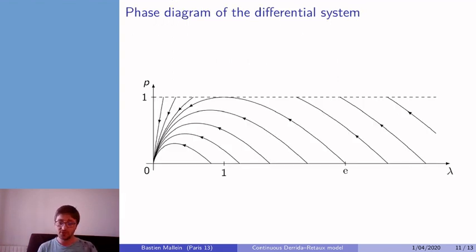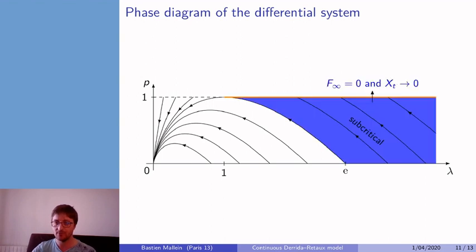So I draw here some lines that are of the form p over λ plus log λ equal to a constant. So observing that λ has to decrease when it follows this ODE, we can observe that (pₜ, λₜ) follows the black lines according to the arrows. So we can describe three phases of this phase diagram. The subcritical area